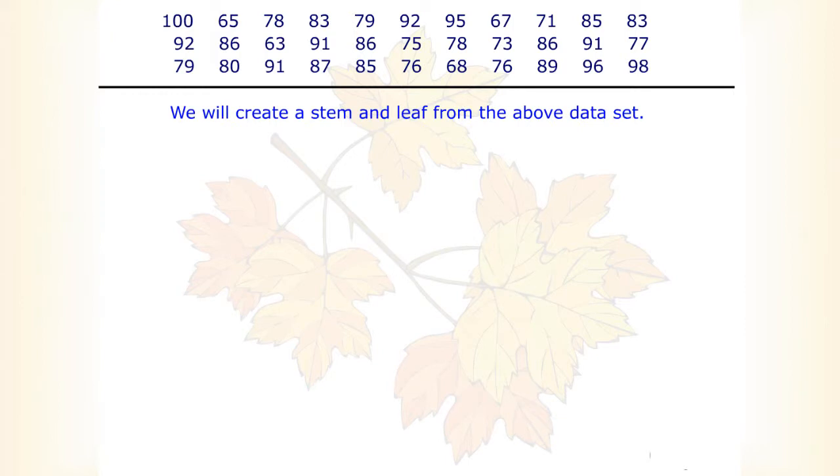We will create a stem and leaf from the above dataset. The stem will be the digits in the tens place, in this case the numbers 6 to 10.